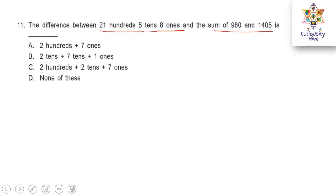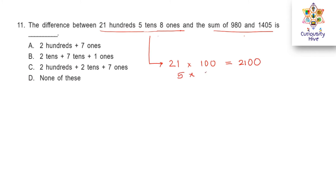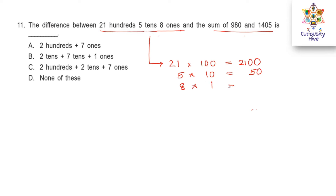We need to find the difference between two numbers. For the first one it is 2 hundreds, that is 21 times 100 which is equal to 2100. 5 tens is 5 times 10 which is equal to 50. 8 ones is 8 times 1 which is equal to 8. So the number is 2158.